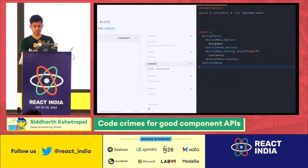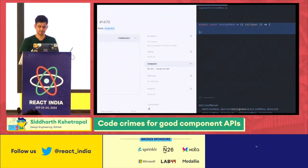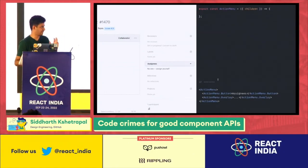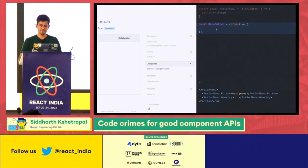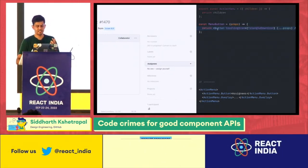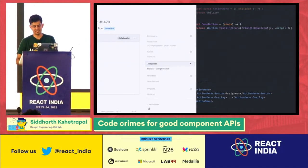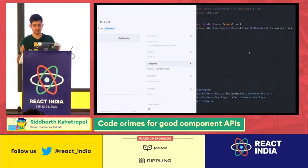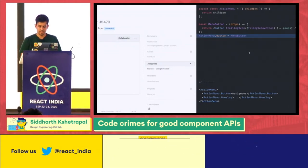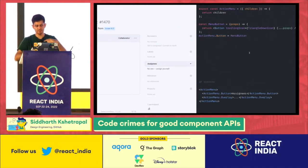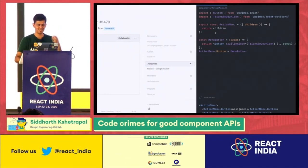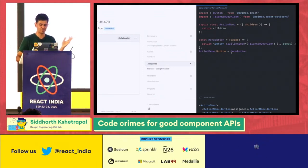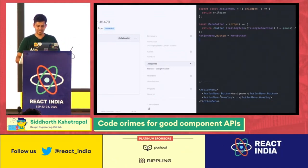So what does the source look like? ActionMenu itself is a boring component — it just renders button and overlay by passing down children. MenuButton is slightly interesting because it has the trailing icon baked in, and it passes down props so you can override the default icon. Components are functions, functions are objects, so you can attach a component to another and say ActionMenu.Button is actually MenuButton, giving you this nice dot-notation API.